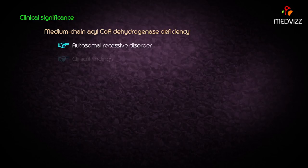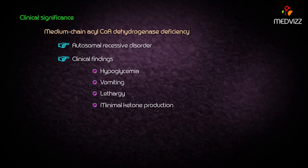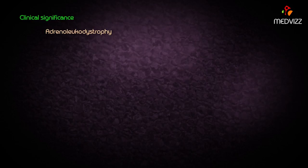Medium chain acyl CoA dehydrogenase (MCAD) deficiency is an autosomal recessive disorder. Clinical findings are predominantly seen in infancy and include hypoglycemia, vomiting, lethargy, and minimal ketone production in the liver.